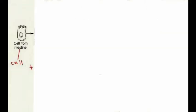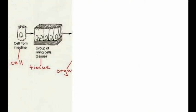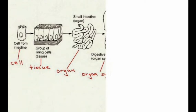As we now know, cell is the basic and the smallest unit of life. This is a cell from our intestine. When similar intestine cells combine, they form a tissue. When a group of similar cells join together, they form a tissue. Similarly, a group of similar tissues join together to form an organ which performs a particular function. Here, the organ formed is the small intestine.